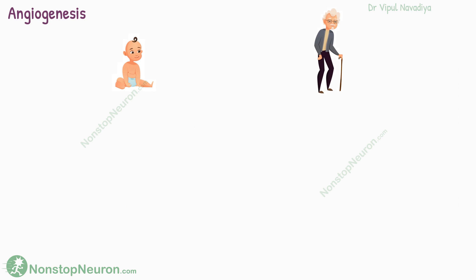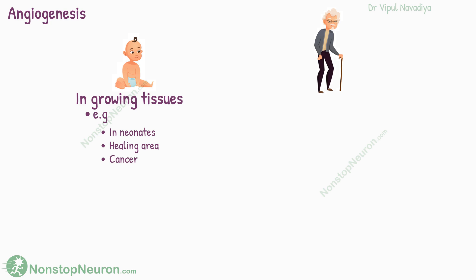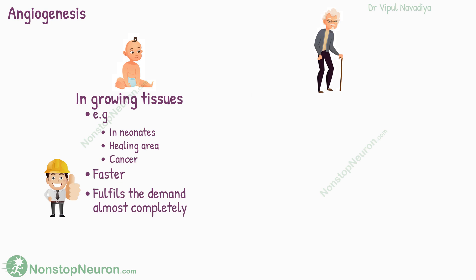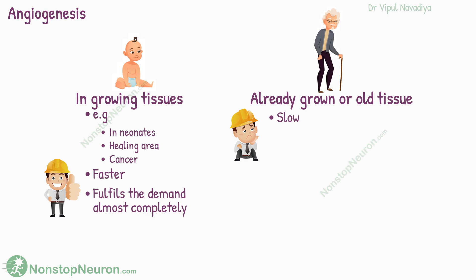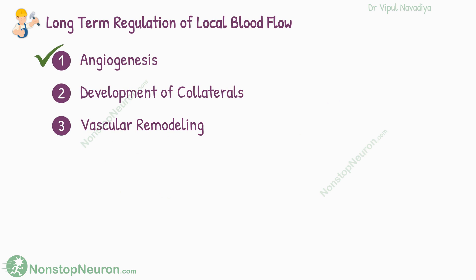In general, the extent of this reconstruction depends on the underlying tissue. In growing tissues like in neonates, healing areas, and cancerous tissues, it occurs faster, and the vascularity almost matches the need of the tissue, fulfilling the increased demand almost completely. On the other hand, in already grown or old tissues, it occurs slowly, and the changes might not fulfill the demand completely. So this was all about angiogenesis.